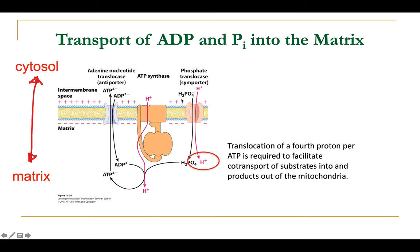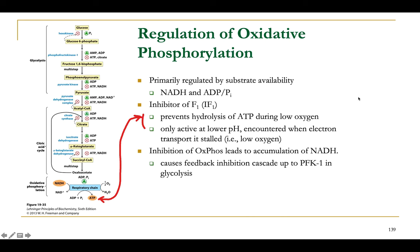The combination of the phosphate translocase symporter and the nucleotide translocase antiporter produces an energy-favorable system that efficiently pumps both substrates — ADP and inorganic phosphate — from the cytosol into the matrix, and simultaneously exports the final product of ATP synthase, ATP, into the cytosol. This system is run by releasing part of the proton electrochemical gradient generated by the electron transport system.